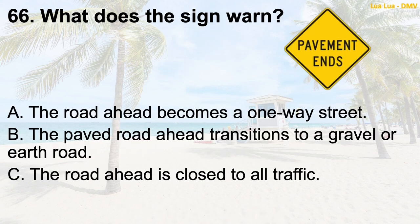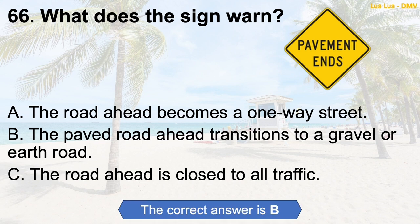Question 66: What does the sign warn? A. The road ahead becomes a one-way street. B. The paved road ahead transitions to a gravel or earth road. C. The road ahead is closed to all traffic. The correct answer is B: The paved road ahead transitions to a gravel or earth road.